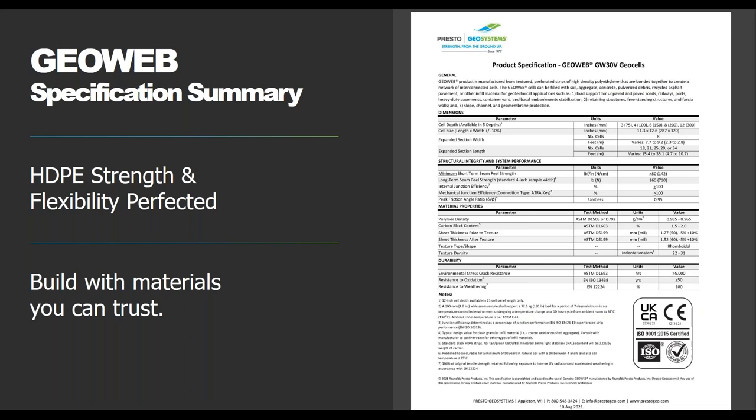Our specification for the GeoWeb system is important to highlight. For a geocell system to perform uniformly, it's critical that the factory-welded seams (internal junctions) and the field-joined seams connecting individual panels with the Atra key (mechanical junctions) all perform at a level commensurate with that of the geocell walls. The three primary elements - cell walls, internal junctions, and connectors - all must perform uniformly as a complete system. An incremental improvement in one characteristic, such as cell wall stiffness or ESCR, is only valuable if a complementary improvement is made in the other components.